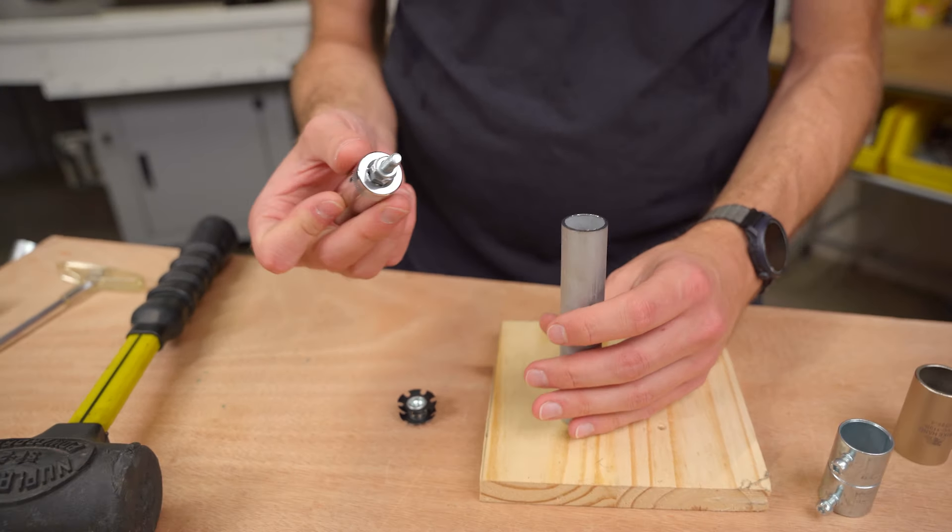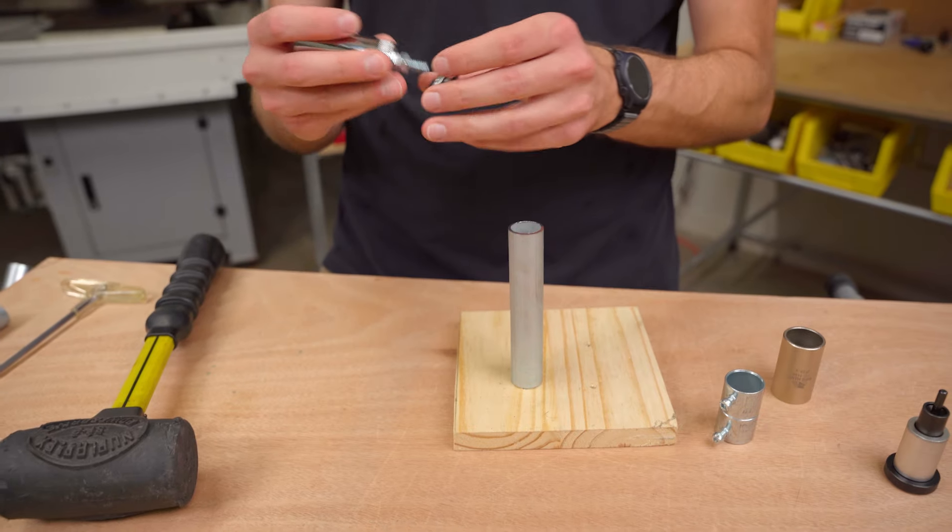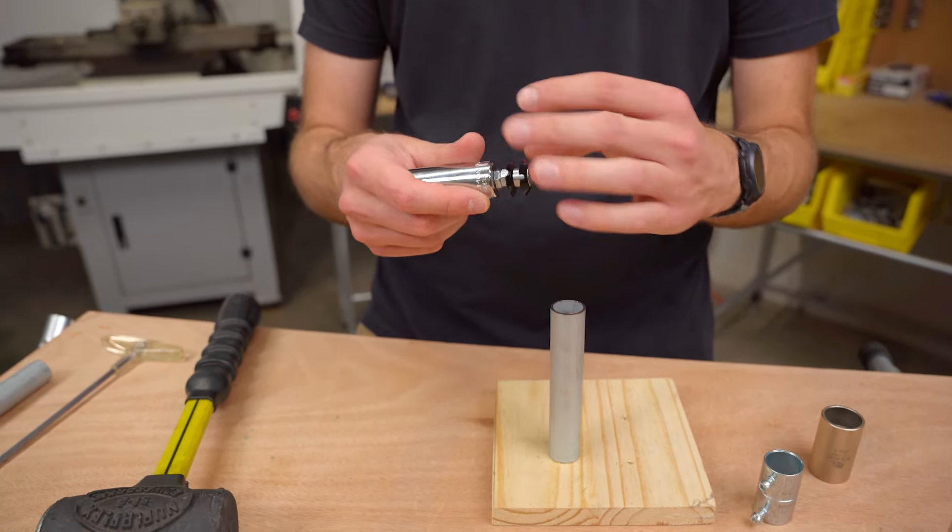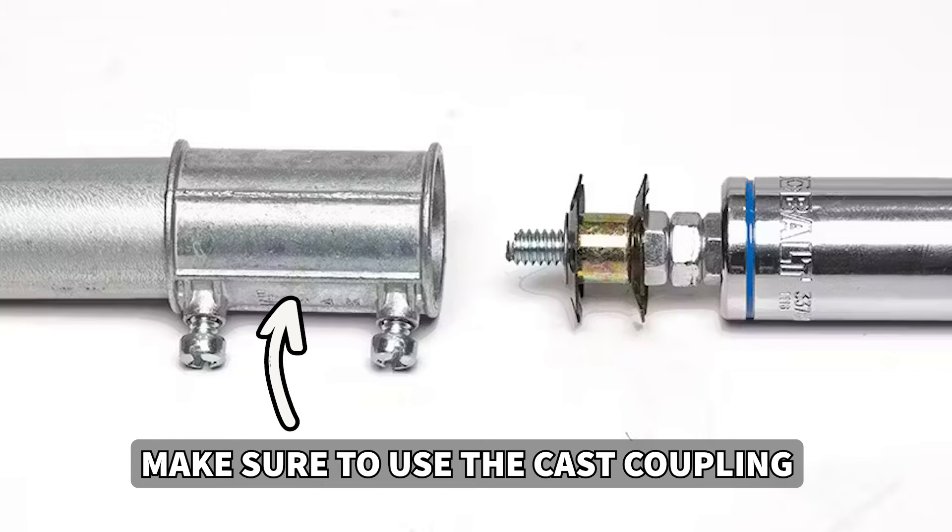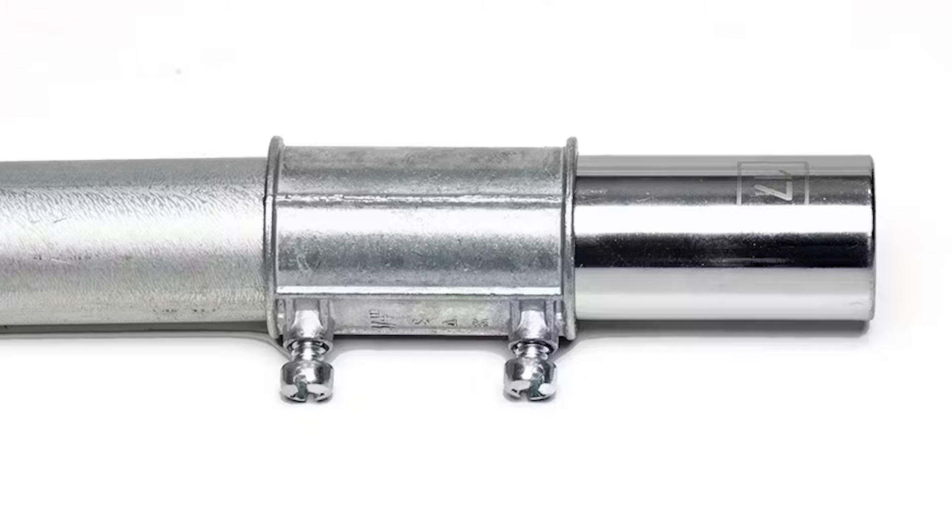And again, it's super easy to make with just a few pieces of hardware. And it works the same way. You just thread this on to the bolt and then use this outer sleeve and then just hammer this into the conduit, which is really cool.